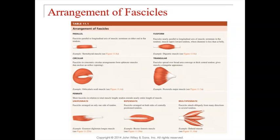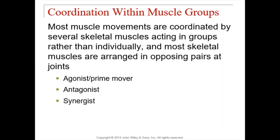A lot of your muscles can actually either help each other out or act against each other. We give names to the different roles muscles can play for certain actions. There's something called the agonist — sometimes called the primary mover or prime mover. There's also the antagonist, the synergist, and something called the fixator. The agonist is a muscle that does the desired action. For example, I might want to flex at my elbow — that's the job of my biceps. So when I want to flex at the elbow, my biceps is the agonist because it's doing my desired action.